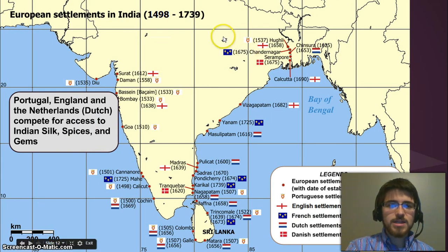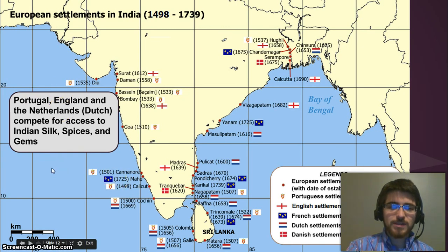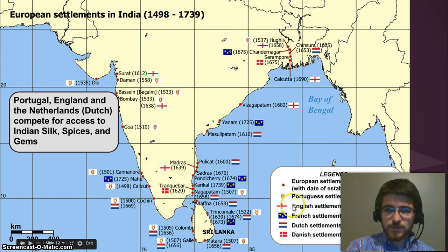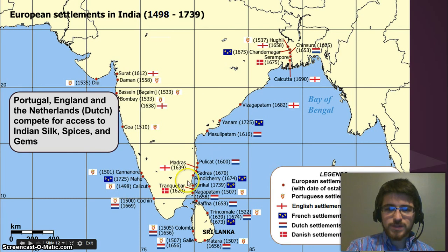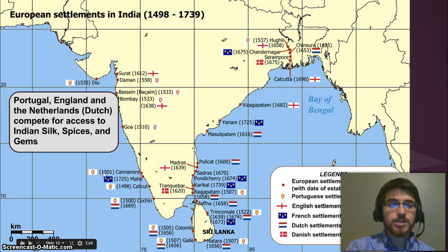Here are the southern Indian trading posts, and some up in the Mughal Empire as well. Portugal, England, and the Netherlands competed for access to these Indian silk, spice, and gem trade routes. You can see here the Europeans — the key shows what the different flags mean. The Portuguese, shown with a red shield, and the English traded back a lot; the English won a lot of trading posts from the Portuguese. The Dutch had a lot of trading posts, and even the Danish and French had a lot of trading posts. They dominated the trade in this area in order to get access to those really important luxury goods.